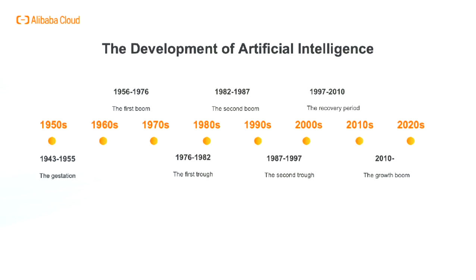The development of artificial intelligence has experienced three ups and downs, which can be divided into seven stages: namely the gestation, the first boost, the first trouble, the second boom, the second trouble, the recovery period, and the growth boom.